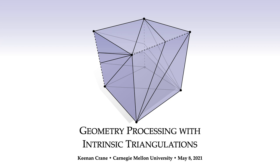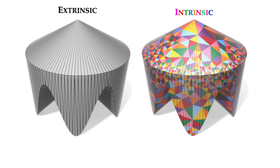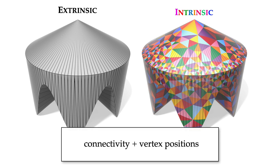This time I'm going to look a bit more on the algorithm side. Just as a reminder, the high-level idea was that rather than working with an ordinary triangle mesh in R3, we're going to allow ourselves to draw different triangulations over the same polyhedral surfaces, where edges are no longer just straight segments through space, but rather curved paths that go along the original surface. Or more abstractly, an intrinsic triangulation is given by connectivity plus edge lengths, rather than connectivity plus vertex positions.